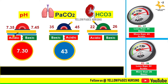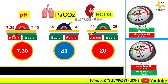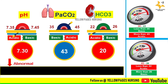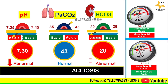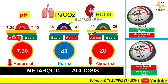Next example: pH is 7.30, PaCO2 is 43, and bicarbonate is 20. The pH of 7.30 is below normal, indicating acidosis. PaCO2 is within normal range at 43. Bicarbonate is below normal at 20, also indicating acidic. Therefore, we conclude the ABG is metabolic acidosis, since there is an abnormality with bicarbonate and pH.